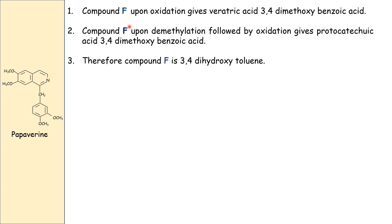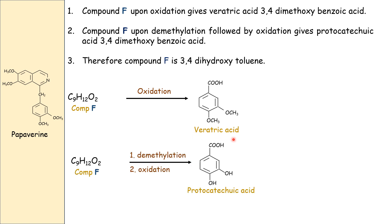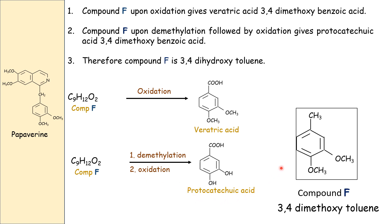Compound EF upon oxidation gives veratric acid, which is 3,4-dimethoxybenzoic acid. Compound EF upon demethylation followed by oxidation gives protocatechuic acid. Therefore compound EF is 3,4-dimethoxytoluene. These reactions confirm the structure of compound EF as 3,4-dimethoxytoluene.